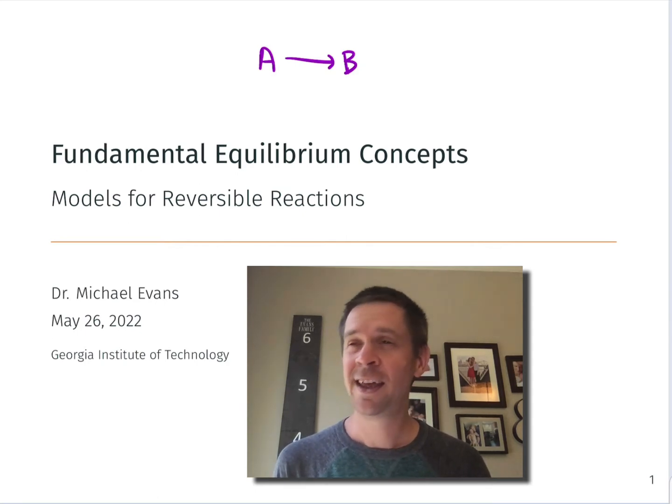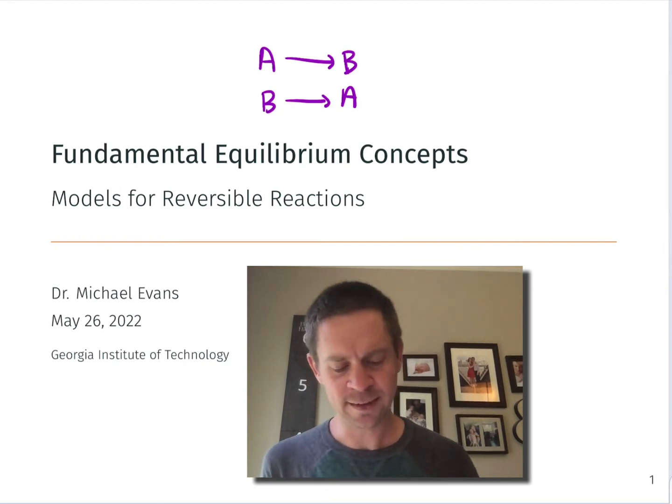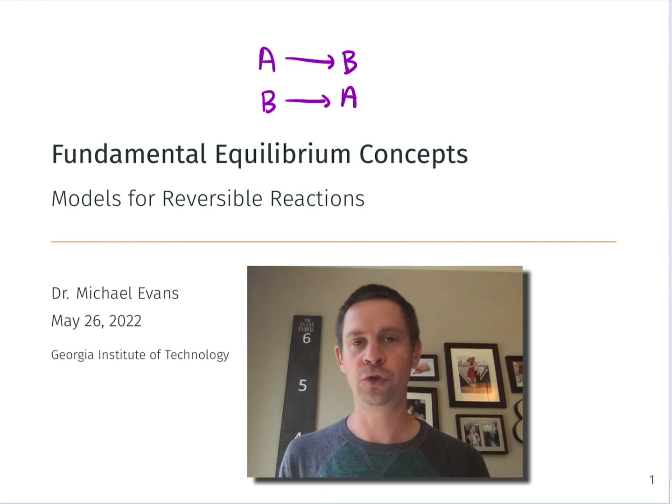But it might give us some pause, right? Because if we can write the reaction A going to B, well, we can write the reaction B going to A. And here B is now the reactant and A is the product. And it seems like if nature wants to do the conversion of A to B, then the conversion of B to A is something that nature, quote unquote, does not want to do.